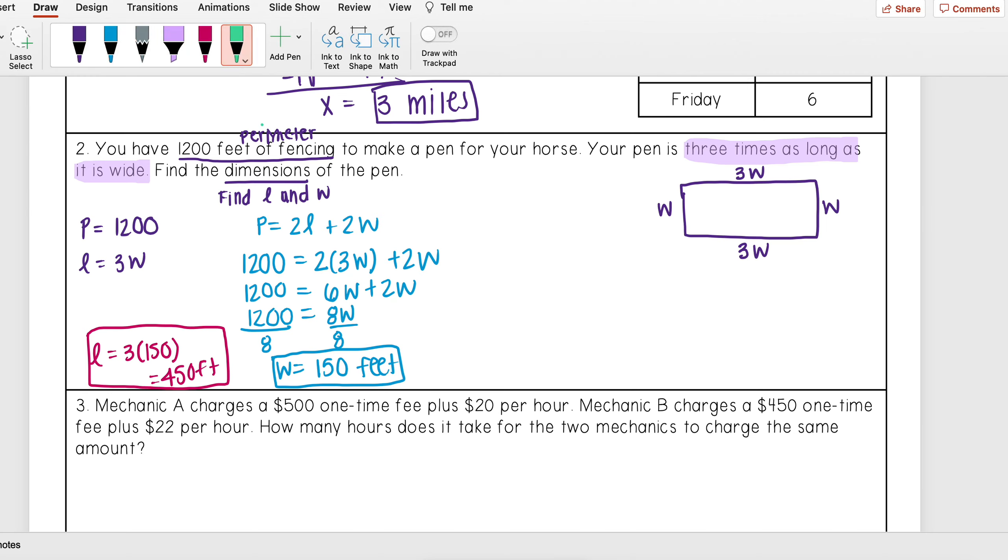Another way that you can think through this is that perimeter is also just adding up all the sides. So you can think of it as w plus w plus 3w plus 3w instead. Just add up all those sides. And so go through that same process of replacing everything, and so w plus w plus 3w plus 3w gets 8w. And you still end up with the same thing.